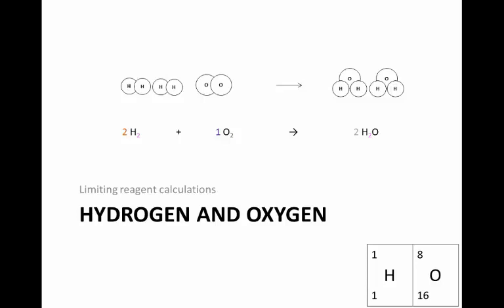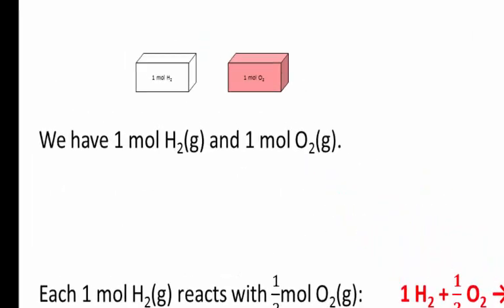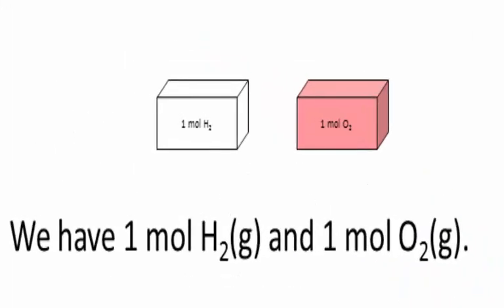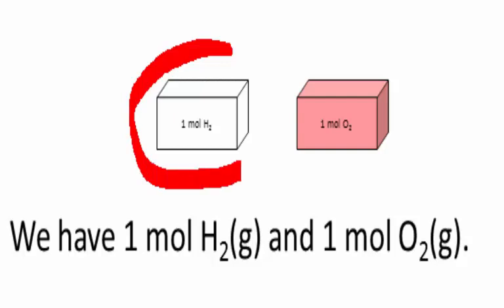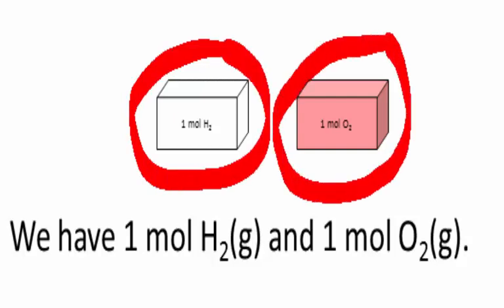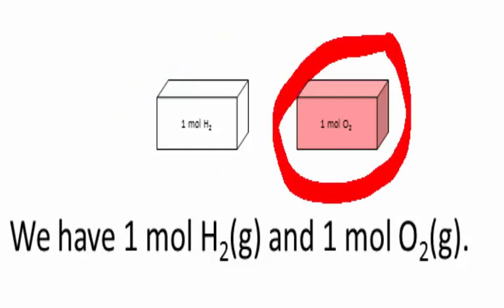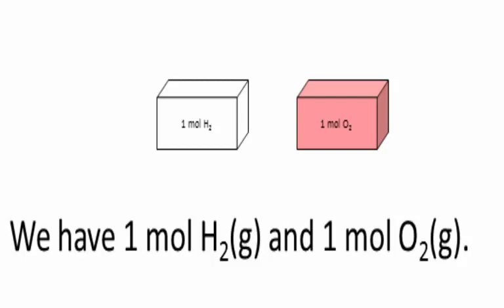Let's look at the reaction between hydrogen and oxygen to produce water to understand limiting reagent calculations better. We have one mole of hydrogen and one mole of oxygen, and we have to find out which of these two is the limiting reagent.